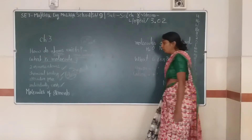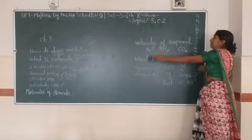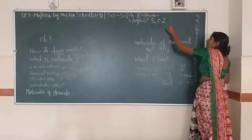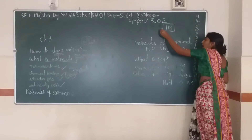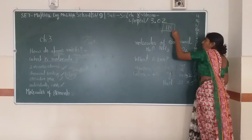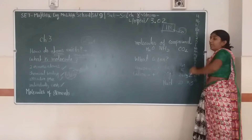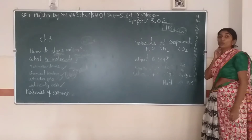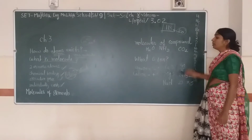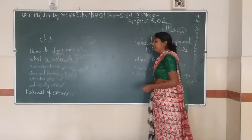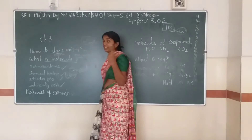There are certain types of elements. Till now 118 elements are known. Out of them, we are going to focus on the first 20 elements. We will try to memorize these 20 elements. The first one is hydrogen.